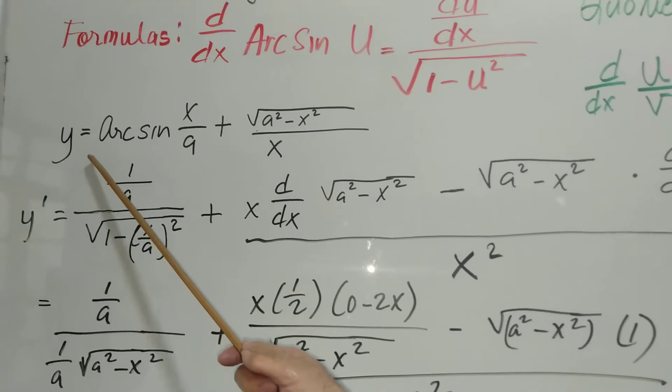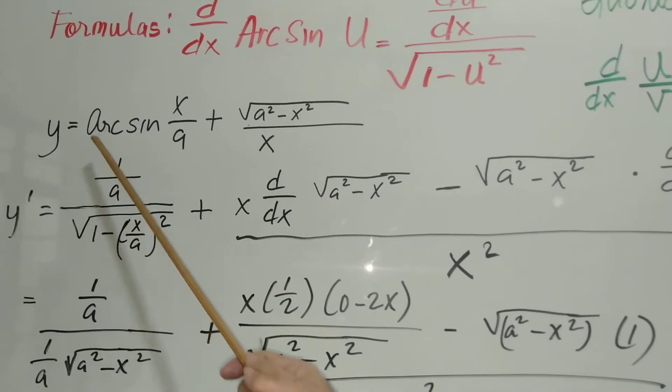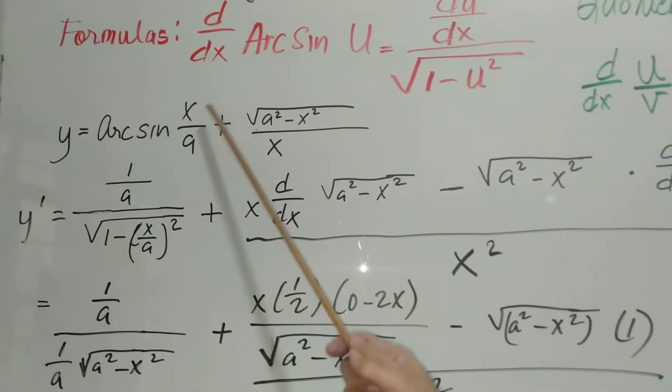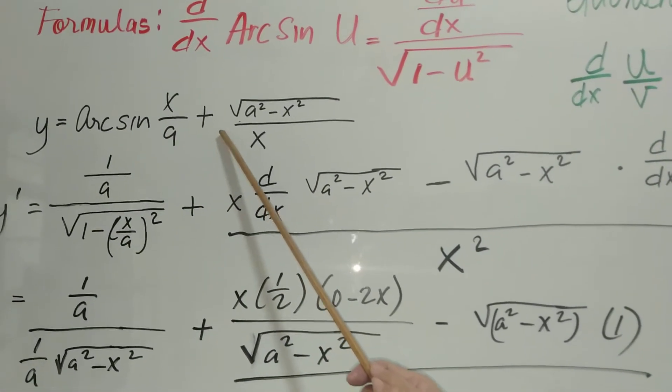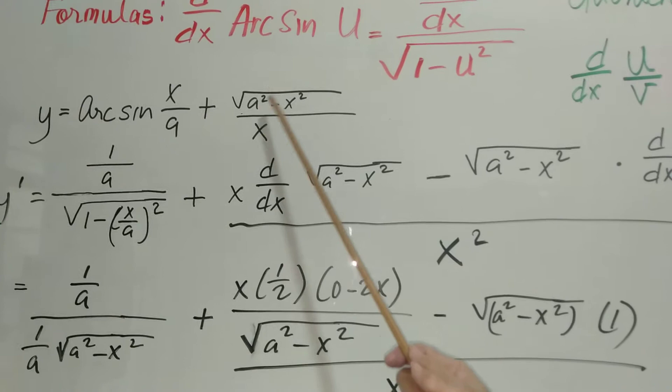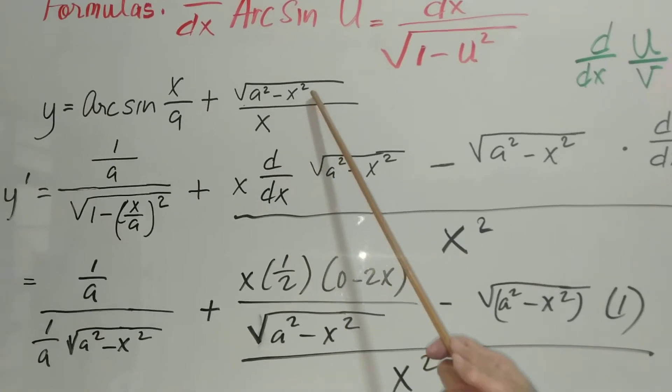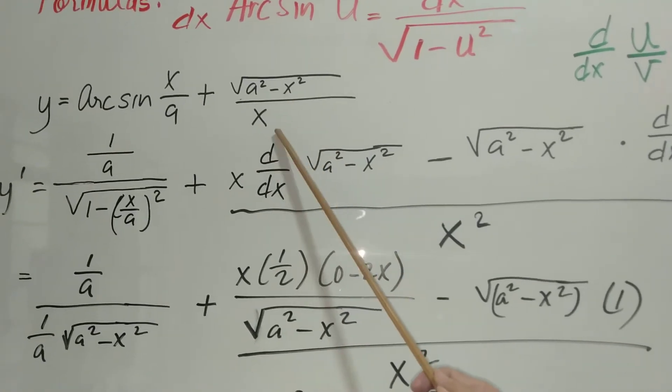Problem number one: y is equal to arcsin(x/a) plus the square root of a squared minus x squared, all over x.